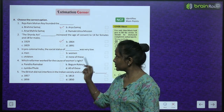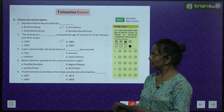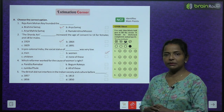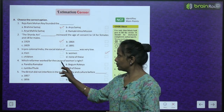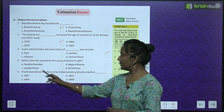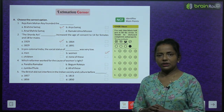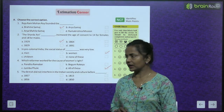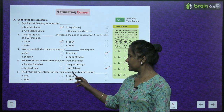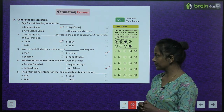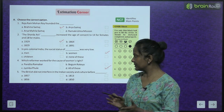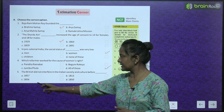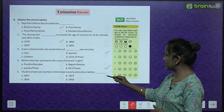In pre-colonial India, the social status of whom was very low? Men, women, children, or none of these? Answer: The social status of women was very low. Which reformer worked for the cause of women's rights — Pandita Ramabai, Begum Rokeya, Jyotiba Phule, or all of these? Answer: All of them worked for the cause of women's rights. The British did not interfere in Indian society and culture before which year — 1857, 1813, 1856, or 1850? Answer: Before 1813.